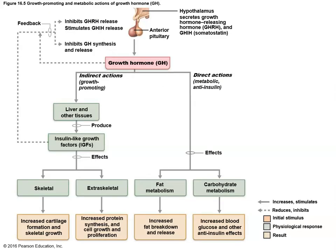Growth hormone has a lot of functionalities. As its name suggests, it promotes growth — increasing skeletal cartilage formation and bone growth, increasing protein synthesis, cell growth, and production. It also increases fat metabolism and carbohydrate metabolism. So growth hormone has both growth effects and metabolic effects. That makes sense: if you're growing, you need enhanced metabolism to go along with it.